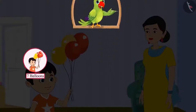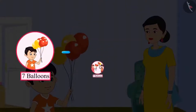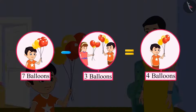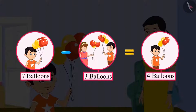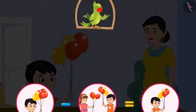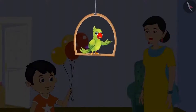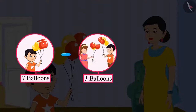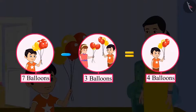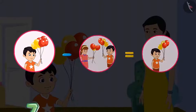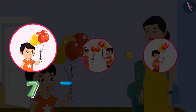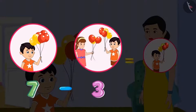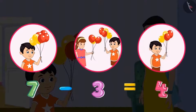So friends, in this example, you saw that if from seven balloons we subtract three balloons, then four balloons are left. Come, let us see how to write this in a systematic way. On subtracting three from seven, four are left. Seven minus three equals four.